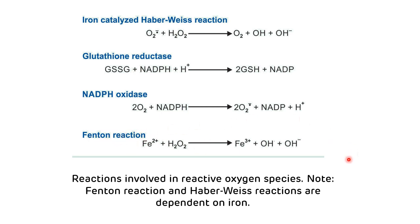The second reaction is the iron-dependent Fenton reaction, where hydrogen peroxide is converted to the hydroxyl radical — the most powerful free radical. Glutathione reductase converts oxidized glutathione to reduced glutathione in an NADPH-dependent reaction, with NADPH coming from the HMP shunt pathway. NADPH oxidase synthesizes the superoxide anion radical involved in respiratory burst.